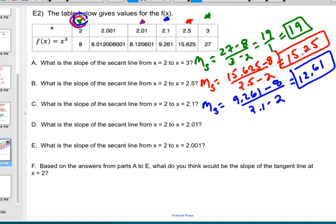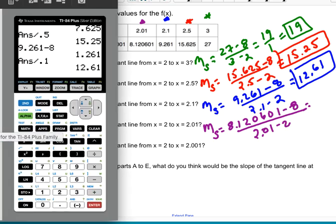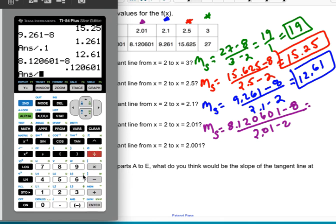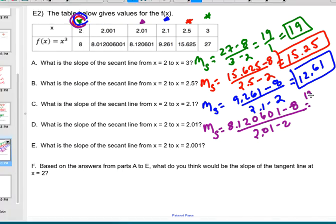Let's go ahead and do the next one. So now I'm using the 2.01 and still using that first point. So my secant slope for the next one is going to be 8.120601 minus 8 over a 2.01 minus 2. So let's go ahead and type that one in. So 8.120601 minus 8 divided by 0.01.